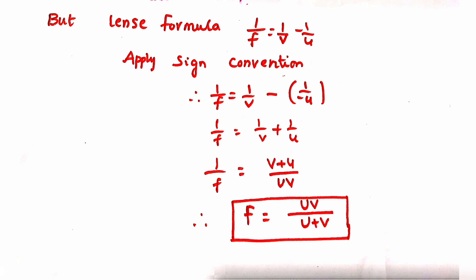To find the focal length from U and V values, we use the lens formula: 1 by F equals 1 by V minus 1 by U. Applying sign conventions, 1 by F equals 1 by V minus of minus 1 by U. Therefore, 1 by F equals 1 by V plus 1 by U, which gives 1 by F equals V plus U by UV. Therefore, F equals UV by U plus V.